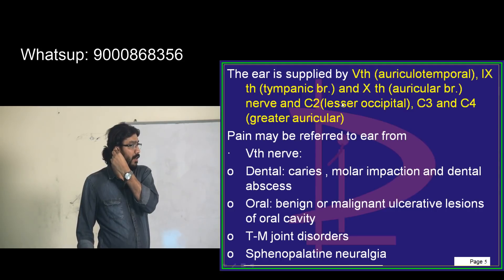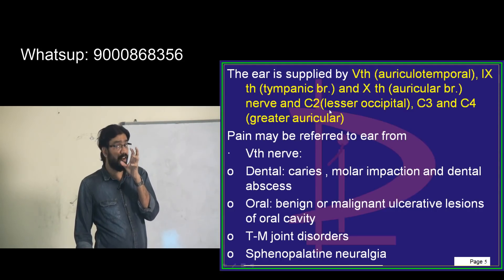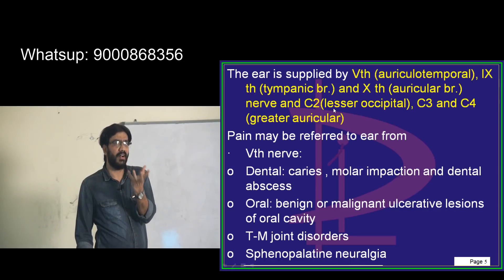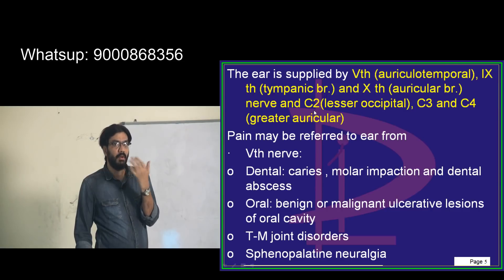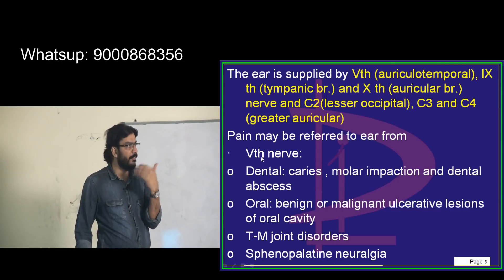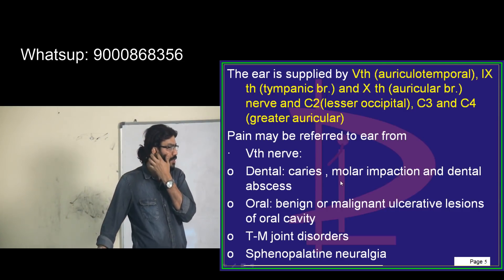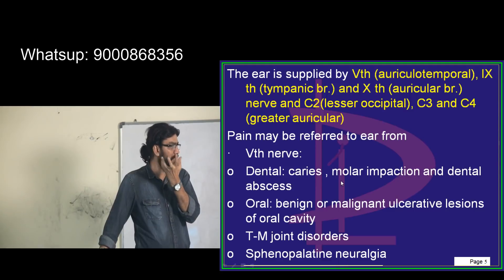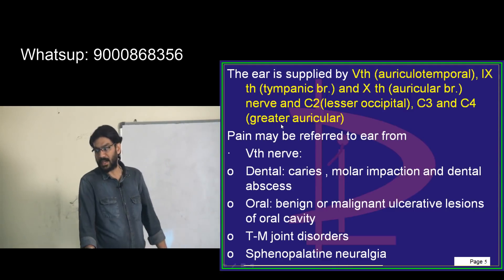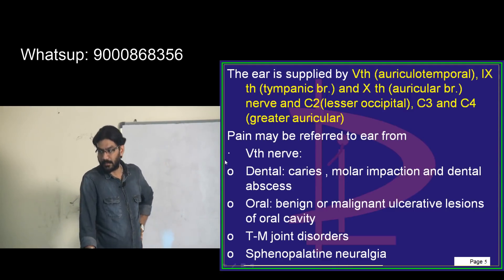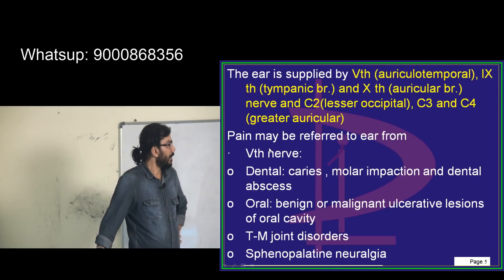The concha, which is shaped like a shell, is supplied by the 10th cranial nerve. The anterior part of the canal is supplied by the auriculotemporal nerve (5th cranial nerve). If you give an auriculotemporal nerve block here, all of the anterior part of the canal will get blocked.